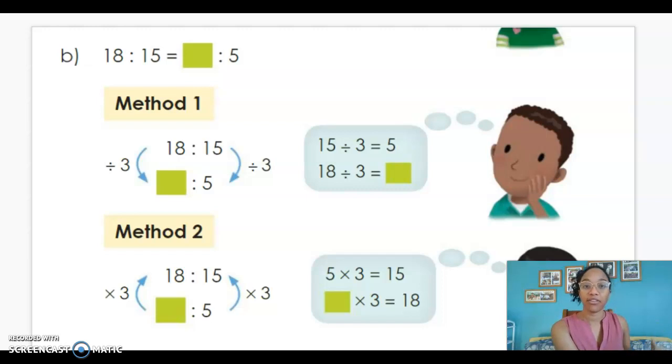So when I divide 18 by 3, I should get 6. 6 is that missing first term of the second ratio. And it's easy to see what's missing when we stack the ratios one on top of the other. Now let's check our work.